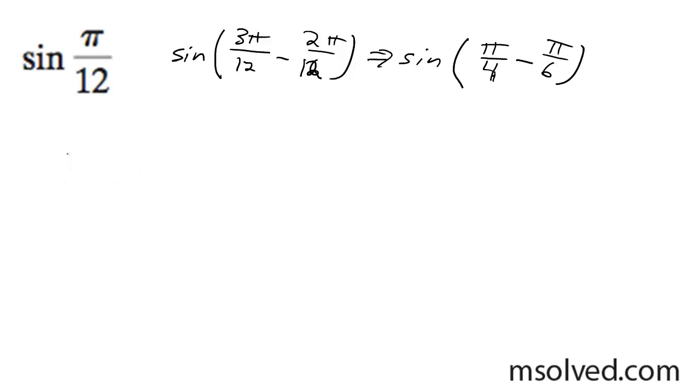So what I'm going to do is bring this down and use these identities. Sine of π over 4 minus π over 6 equals sine of π over 4 times the cosine of π over 6 minus the sine of π over 6 times the cosine of π over 4.